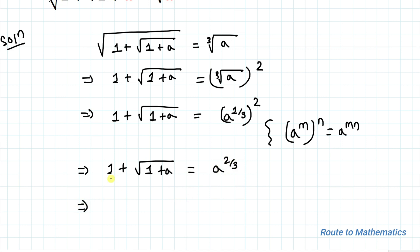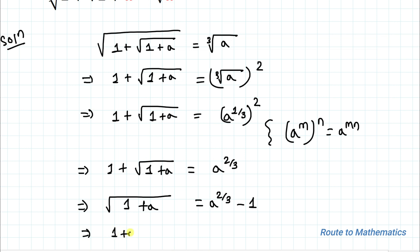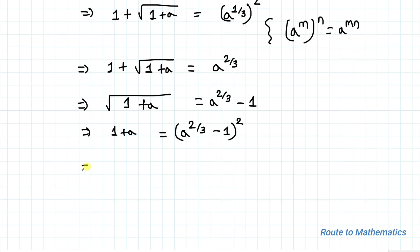In the next step, moving the 1 to the right-hand side, we get √(1 + a) = a^(2/3) − 1. Again, in order to eliminate this square root, we square both sides of the equation, giving us 1 + a = (a^(2/3) − 1)².